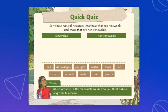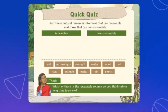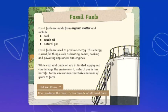Now let's look at fossil fuels. Fossil fuels are organic matter used to produce energy. Coal and crude oil are limited in supply and can damage the environment. Natural gas is less harmful to the environment but takes millions of years to form, so it cannot be replaced.